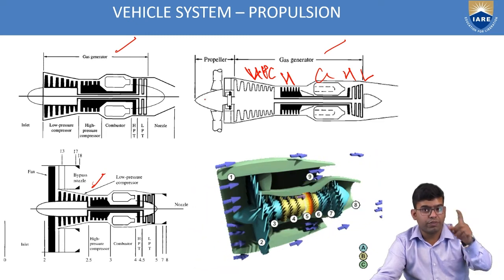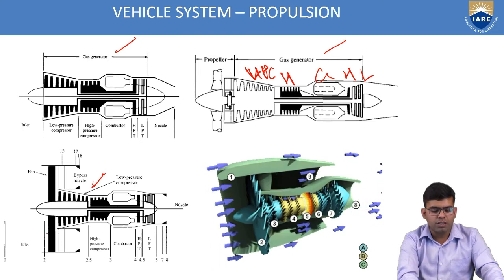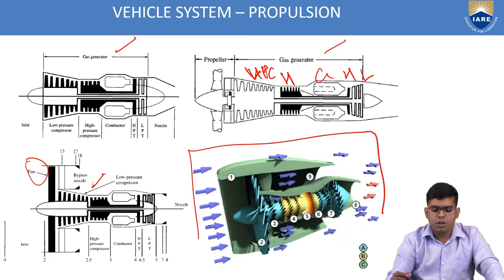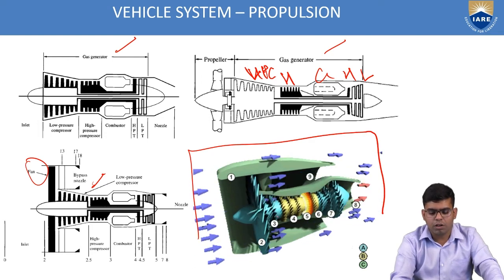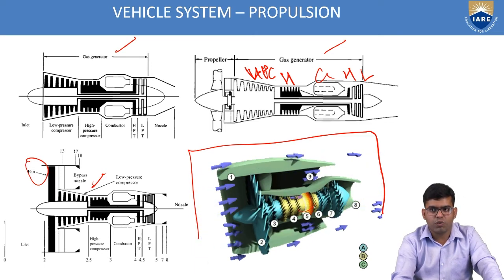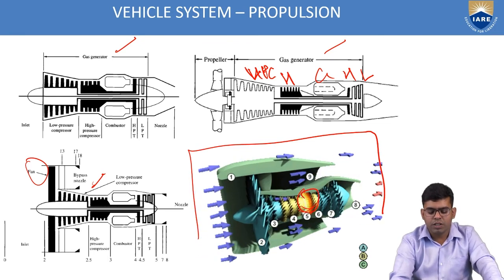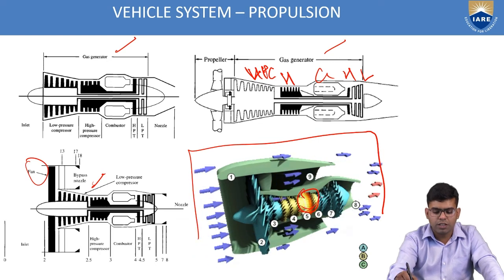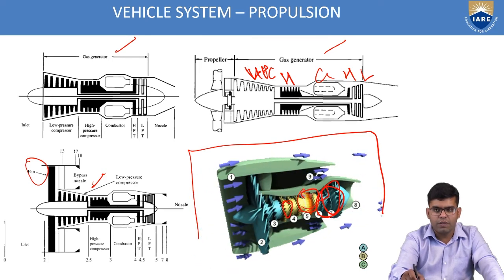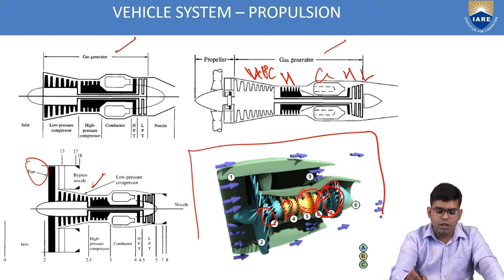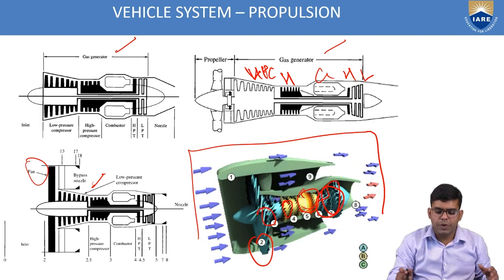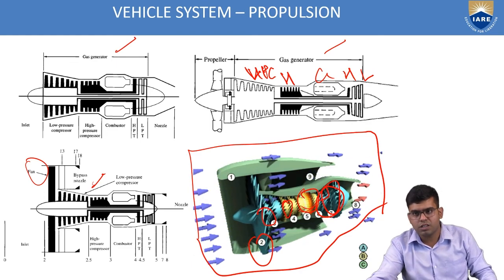In turbofan engines, the same process occurs but instead of a propeller there is a fan. The animated figure shows how this works: the engines are started using the auxiliary power unit to turn the shaft. Once sufficient pressure is reached in the combustion chamber, the air-propellant mixture is ignited. The high pressure turbine at stages 6 and 7 does the work, connected to the high pressure compressor at stage 4 and low pressure compressor at stage 3, which in turn rotates the fan blades at stage 2 to draw in air.